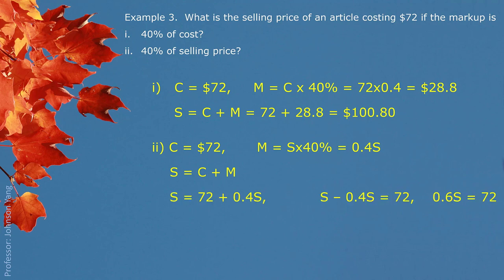$72 plus 0.4S gives us the selling price. We build up the equation about S. We move around to solve S. So S minus 0.4S equals 72, and 0.6S equals 72. 0.6 comes from 1 minus 0.4. So we can get regular selling price 72 divided by 0.6 gives us $120.